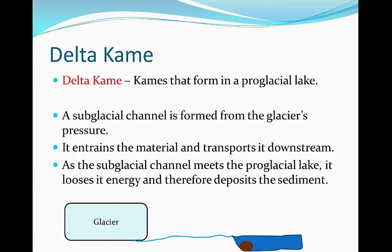There are many ways in which delta kames can be produced — this is just one of them. In your exam, if you have another idea of how delta kames may form, or any other sorts of kames or eskers, that could be right. In cold environments, we never know specifically what is the correct formation of a feature. However, this is one of them, so if you have been taught another way in your textbook, you can write that down as well.